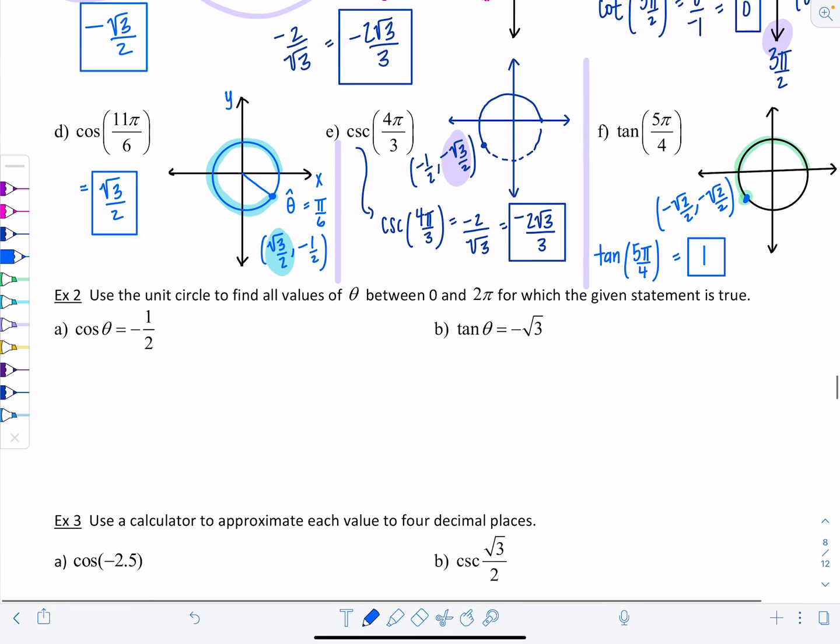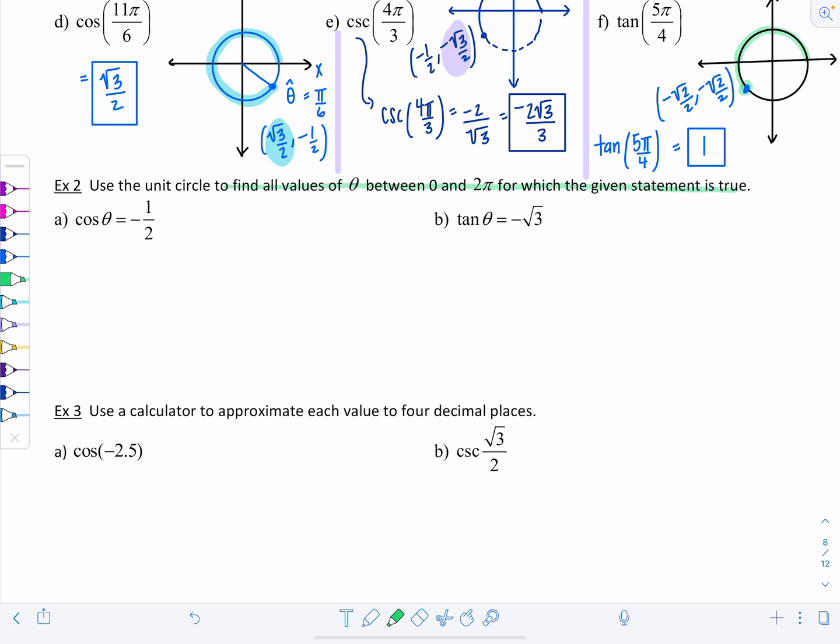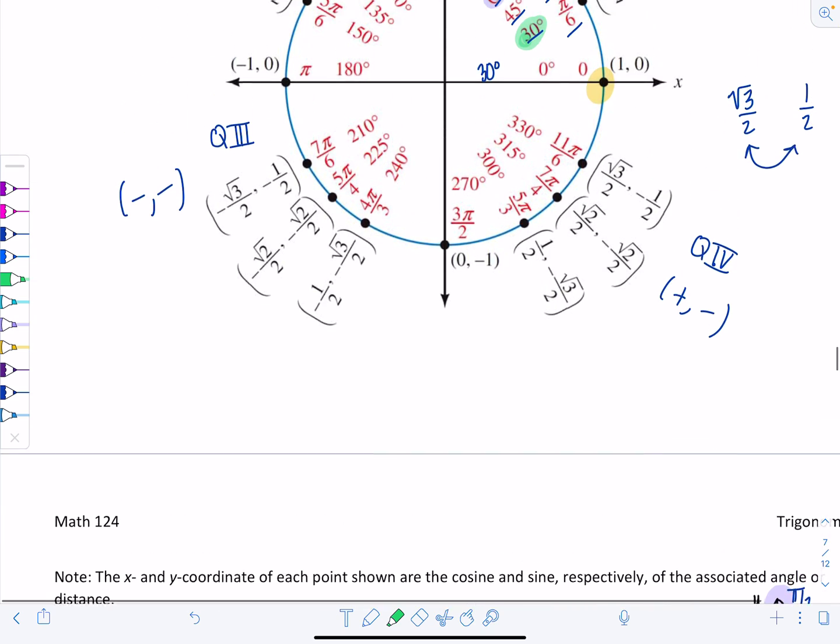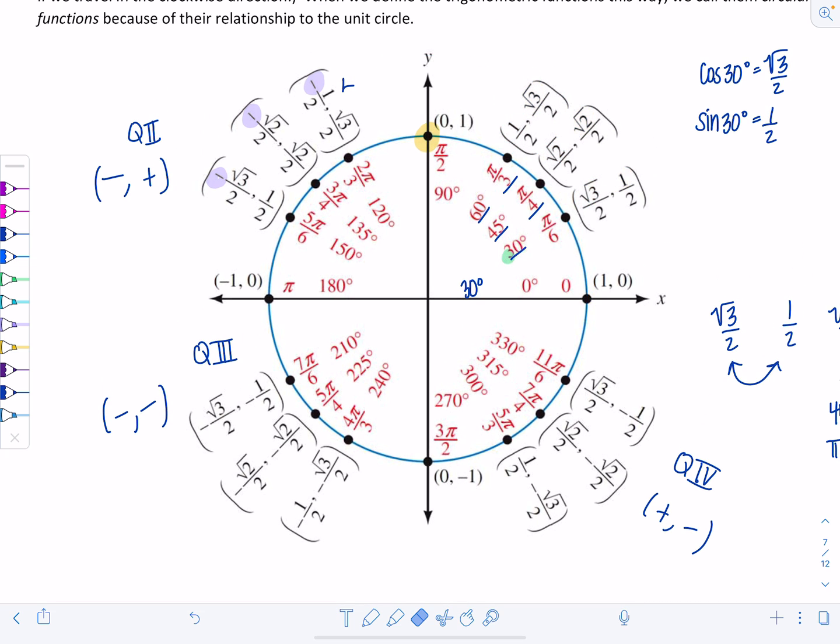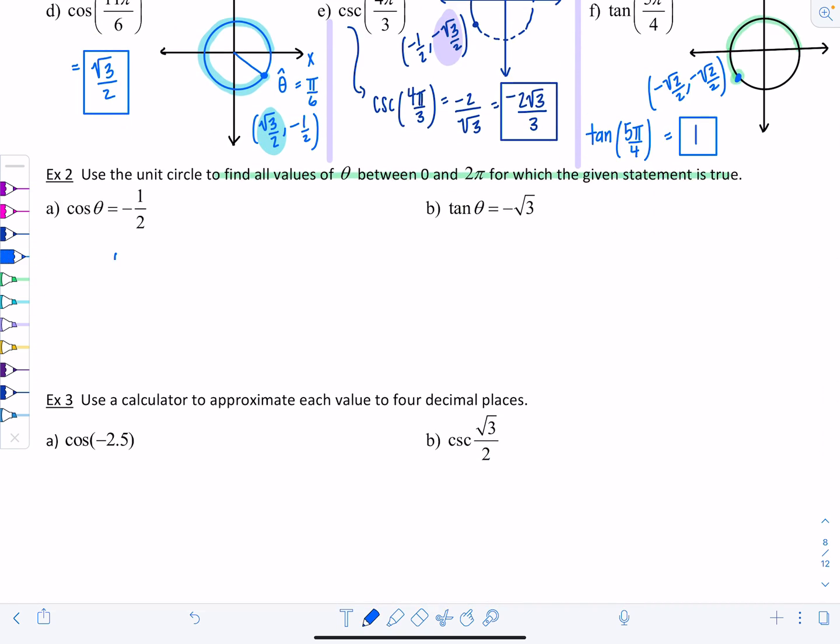Use the unit circle to find all values of theta between 0 and 2 pi for which the given statement is true. For part a, find all values where cosine of theta equals negative 1 half. Cosine corresponds with the x coordinates. Where are the x coordinates equal to negative 1 half? I see one here, another one here. The directions said between 0 and 2 pi, so they're talking radians. 2 pi over 3 and 4 pi over 3 is the answer. Theta is 2 pi over 3 and 4 pi over 3.